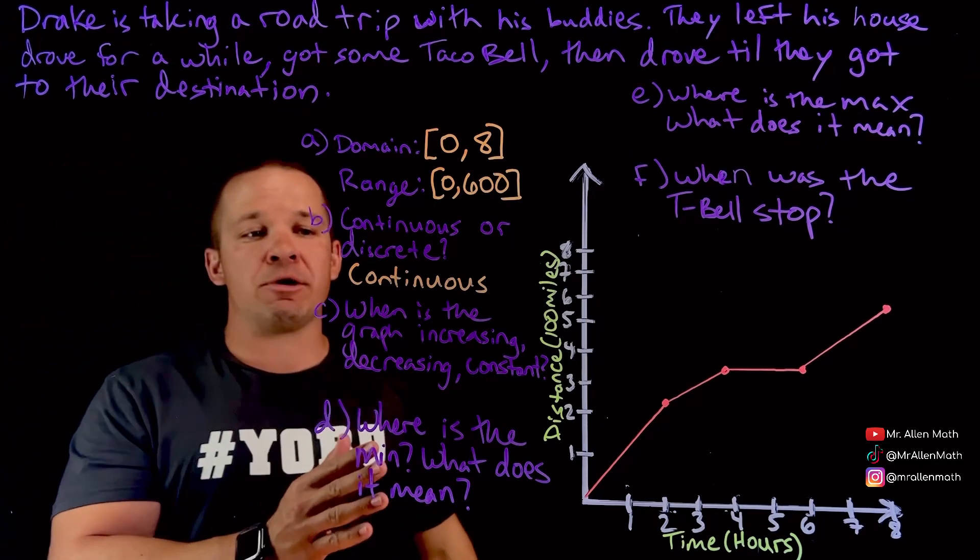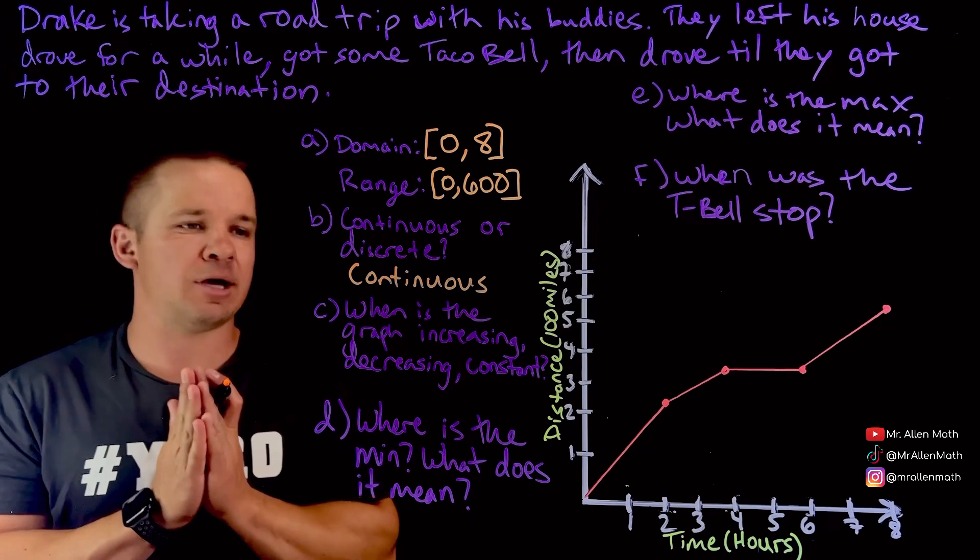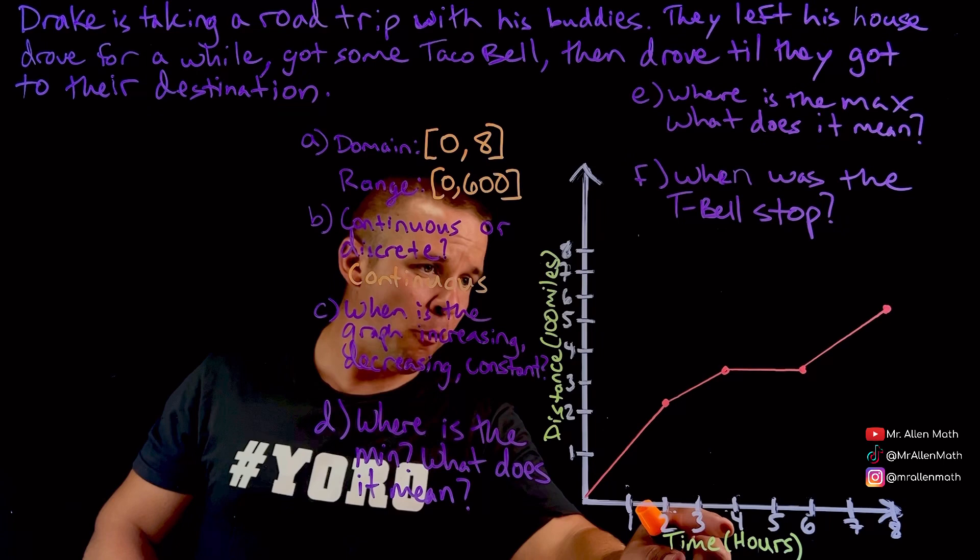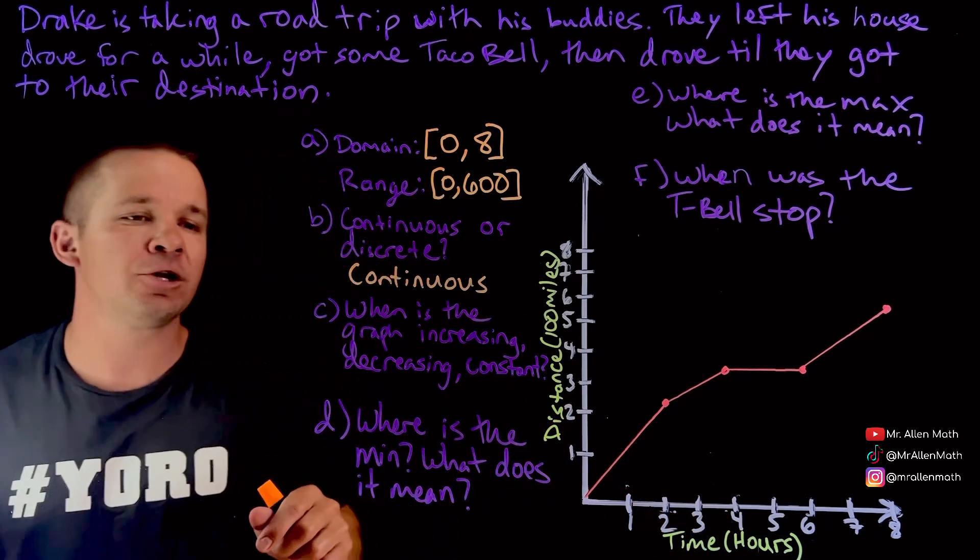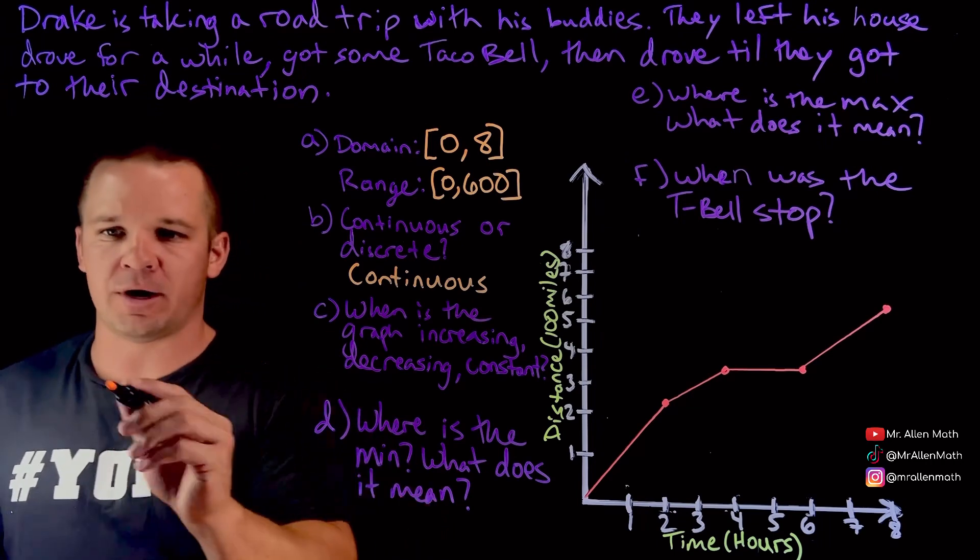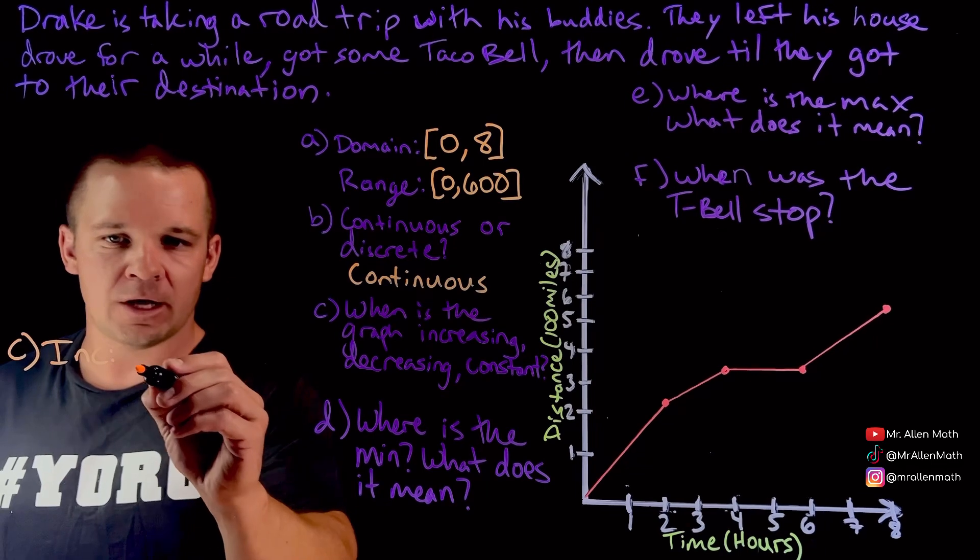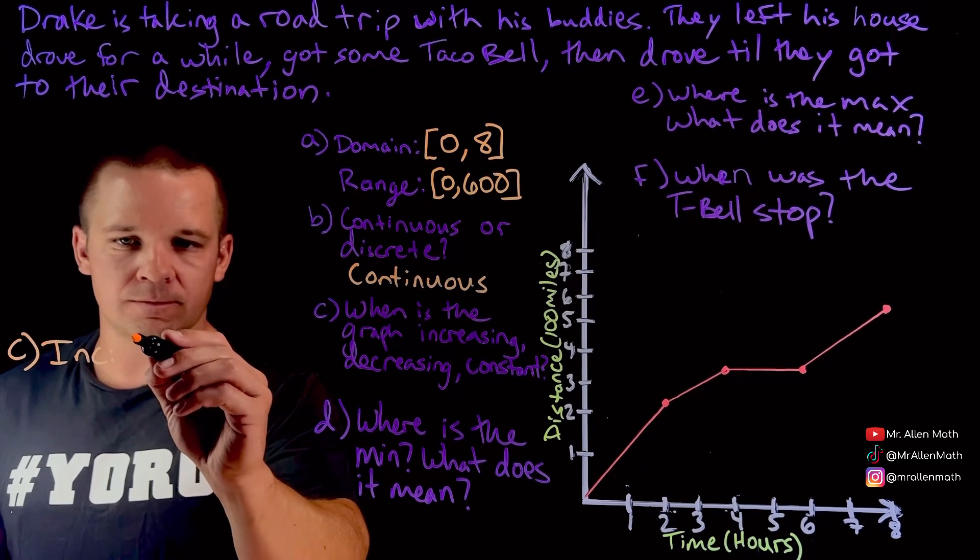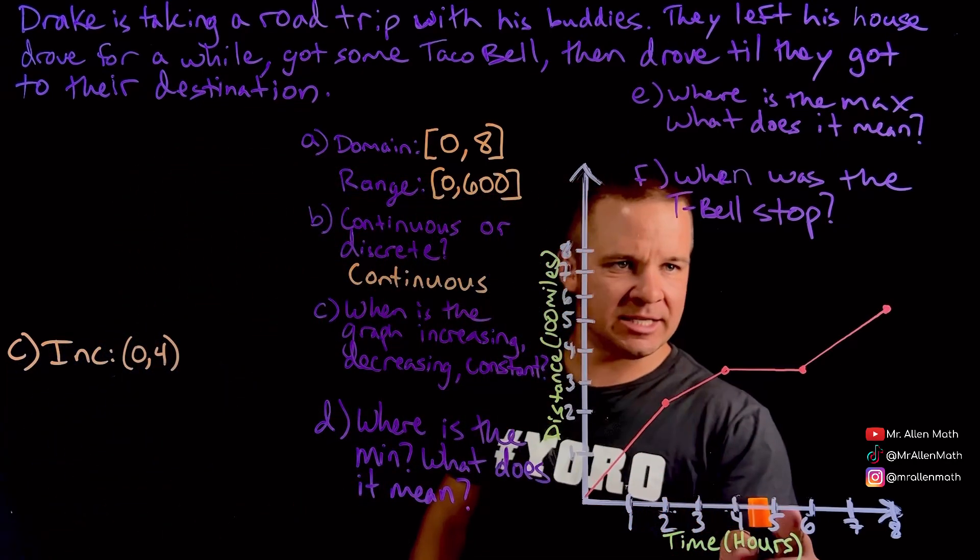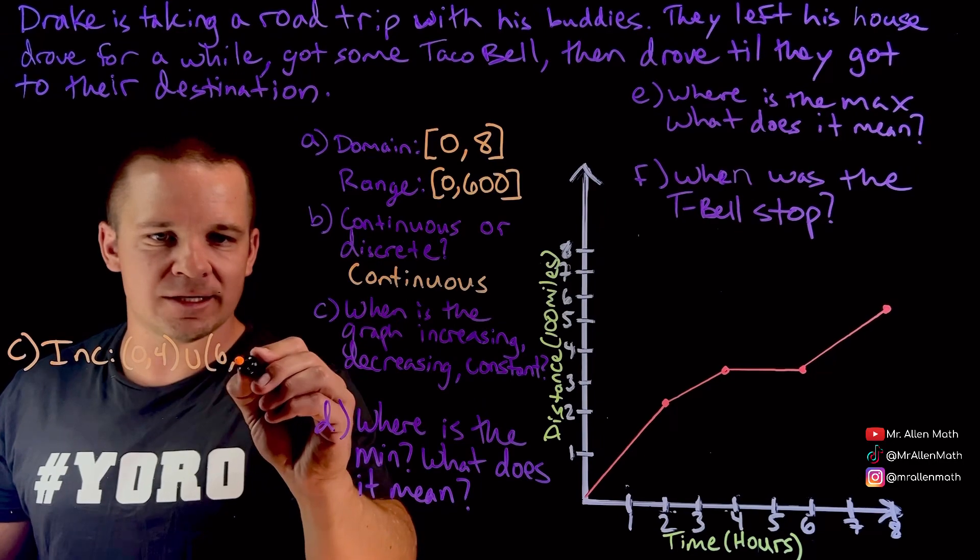When is the graph increasing, decreasing, or constant? Alright. So let's see here. From zero to what looks like about four hours, we are increasing. So let's see. Where do we want to write this? I'm going to write it right over here for part C. So we're increasing. This is going to be part C here. Increasing. We're going to go from zero hours to four hours. And then we're also increasing again, it looks like, at six to eight, right? And then again, from six to eight.